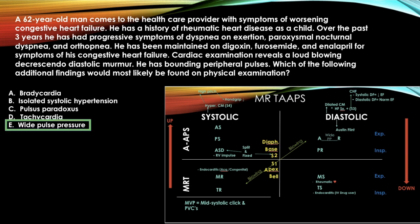The answer is widened pulse pressure. First figure out the murmur: diastolic and blowing = aortic regurg or pulmonic regurg. This is a 50-50 question where other context in the question would lead you to aortic regurg. The charts get you through most murmur questions, but not all — you'll need some additional background knowledge too.